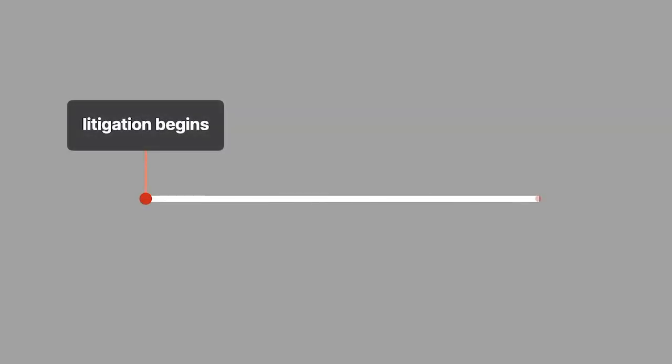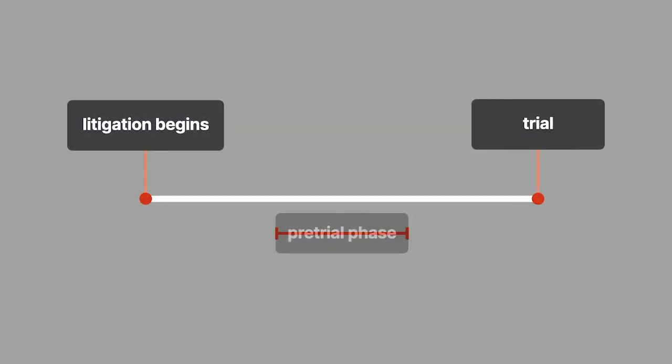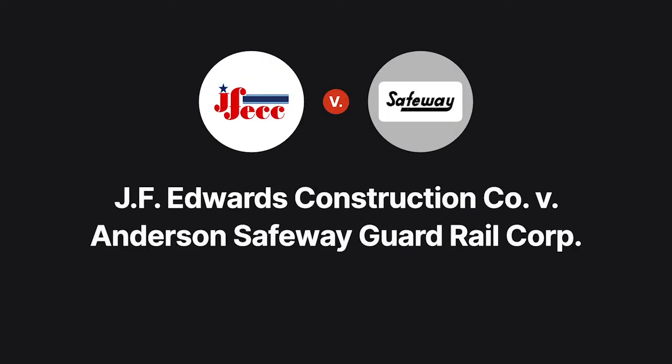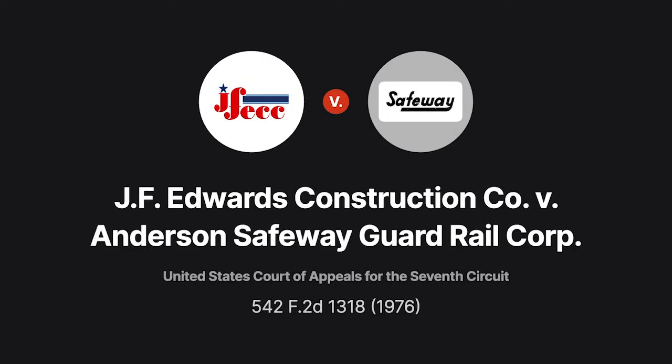Litigation begins, but it isn't time for trial yet. During this pretrial phase, what authority does the judge have to push parties toward resolving their differences? In J.F. Edwards Construction v. Anderson Safeway, a judge's pretrial order pressures the litigants to come to an agreement. One party resists. Can the judge enter sanctions against it?